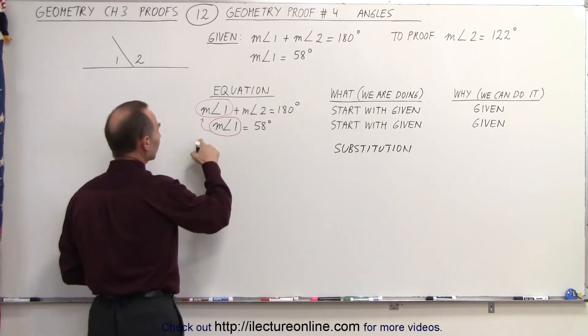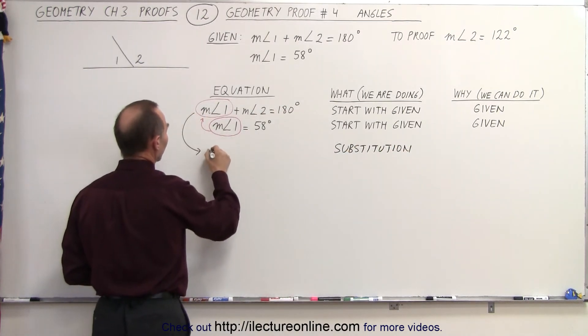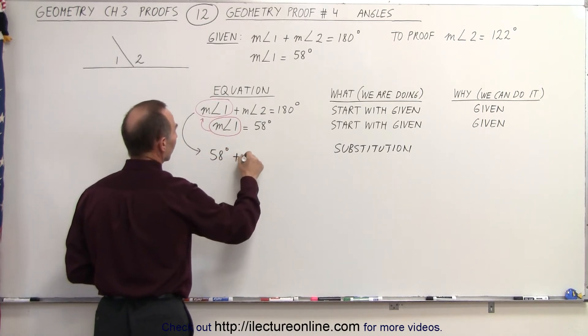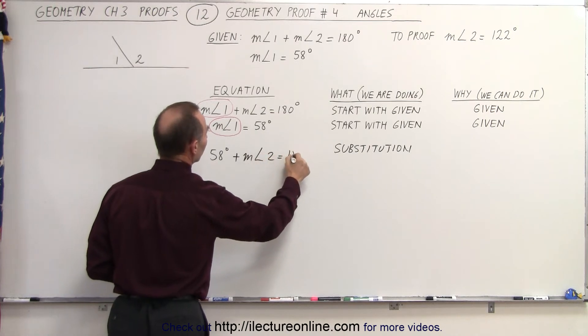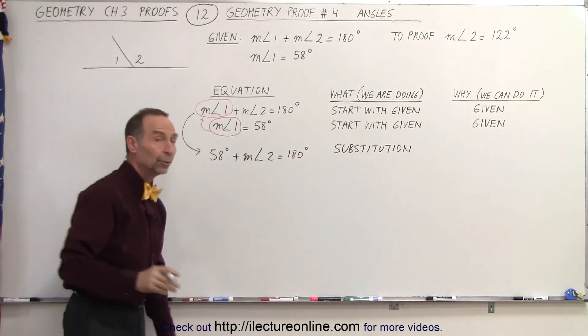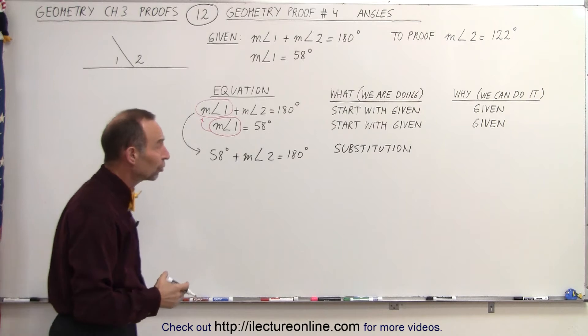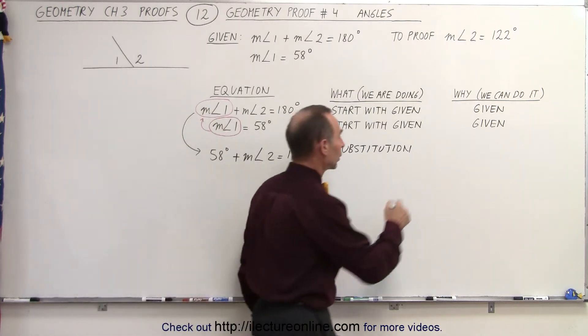Which now means that we're going to write this equation as 58 degrees instead of the measure of angle 1 plus the measure of angle 2 equals 180 degrees. And why can we do that? Well, that's called the substitution property of equality.